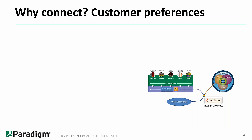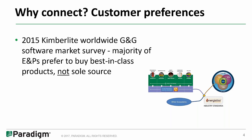So why do we want to connect software packages and ecosystems? I want to go back to this 2015 Kimberlite worldwide G&G software market survey. When asked, the E&P companies said that there was a preference to buy best-in-class software and not to sole source. Of course, all of the software vendor community would prefer the opposite — just go with our software.